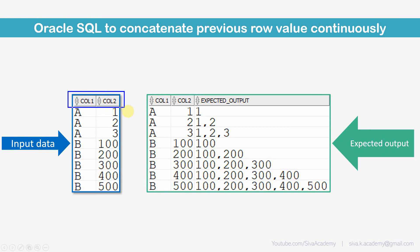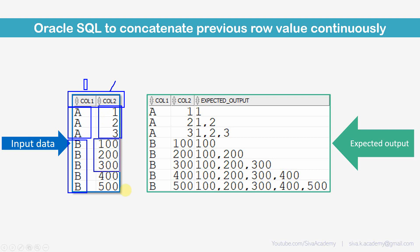We are provided with a table which contains two columns — let's say column 1 and column 2. In the first column we have some repeating values like A and B. Within A there are values like 1, 2, 3, and within B values like 100 through 500.